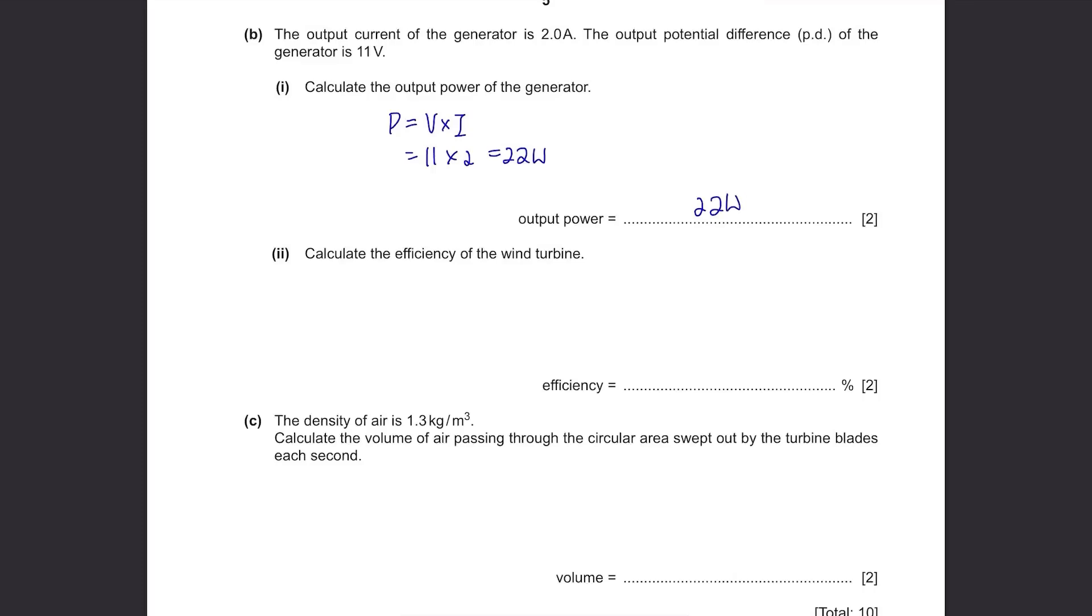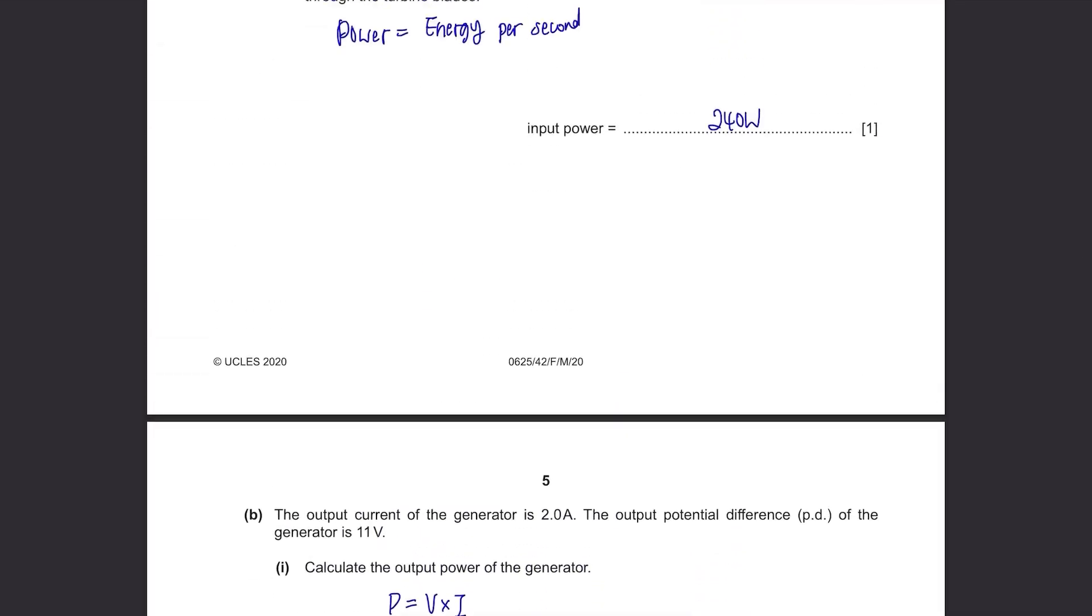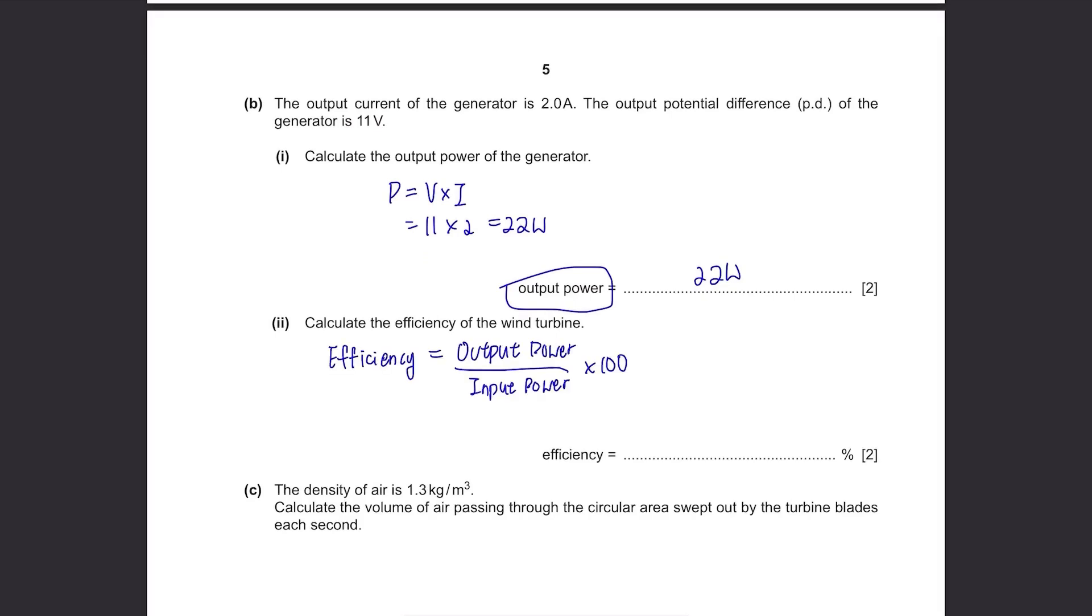Calculate the efficiency of the wind turbine. Efficiency equals output power divided by the input power, multiplied by 100. So it's 22 divided by 240 times 100. If you calculate it, you'll get 9.166 and so on. Round it to 2 significant figures, 9.2 percent.